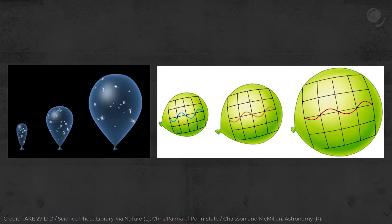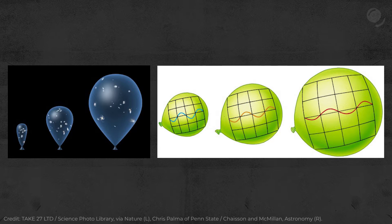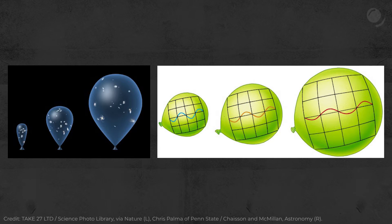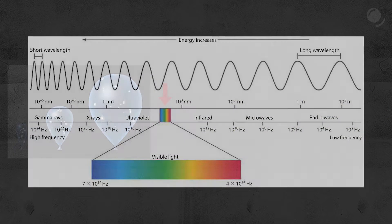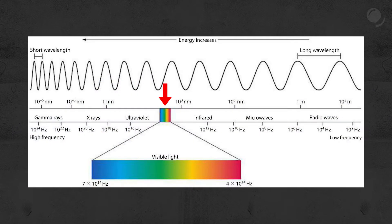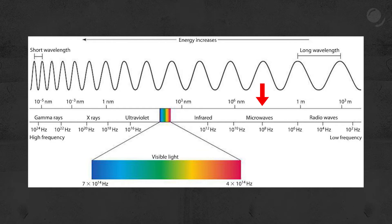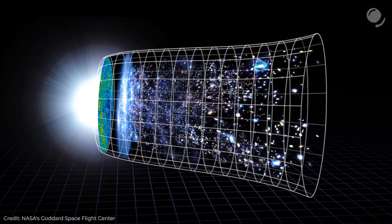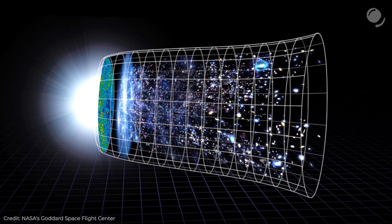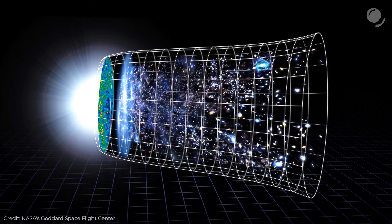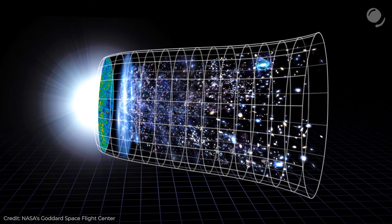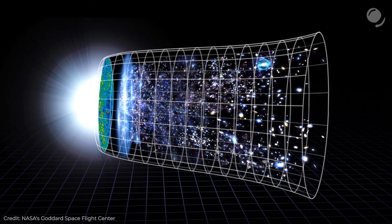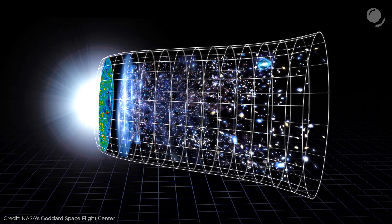Those photons that became free 380,000 years after the Big Bang we are seeing now as the Cosmic Microwave Background radiation. There is no way for us to see what had been before that, which means that the CMB is the earliest stage of the universe we can register — an imprint of a baby universe. While light travels the universe for billions of years, its wavelengths get stretched and shift to the red part of the spectrum, so the initial visible radiation is now registered in the microwave part. The existence and properties of the CMB are very important evidence for the Big Bang theory.